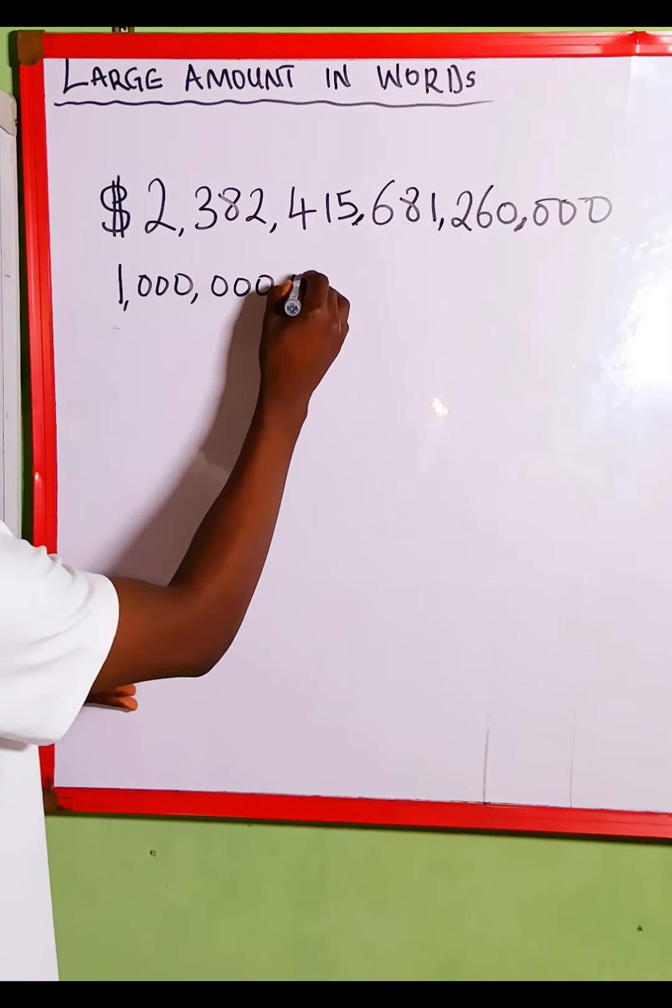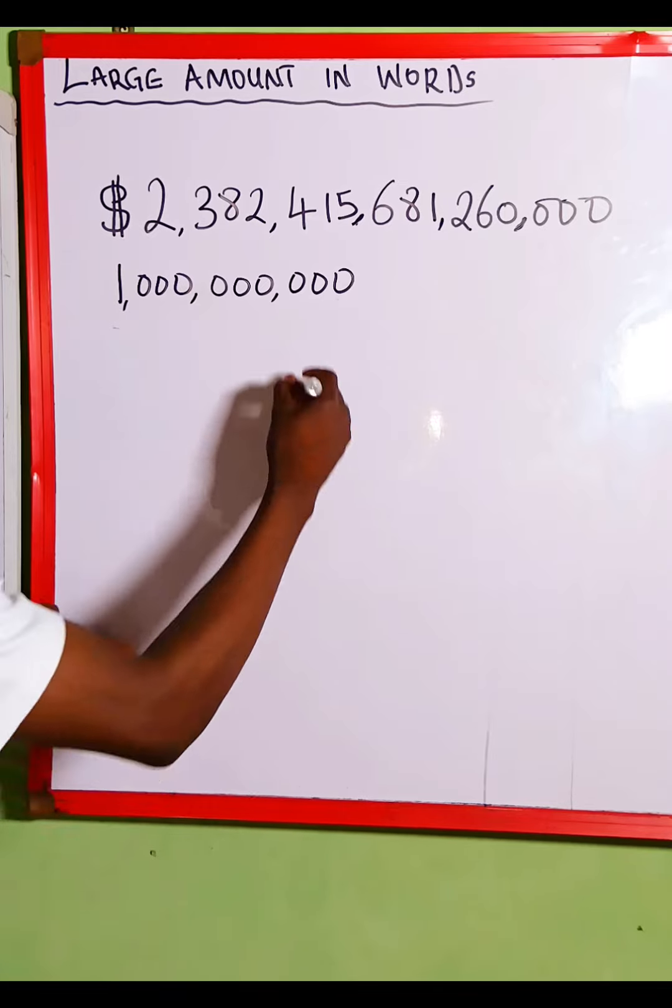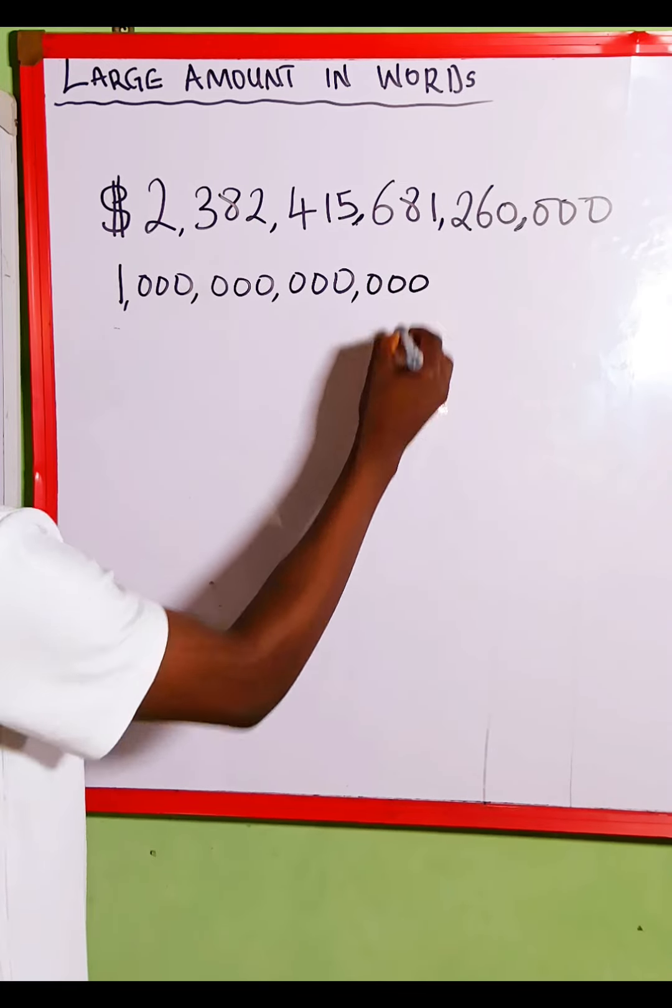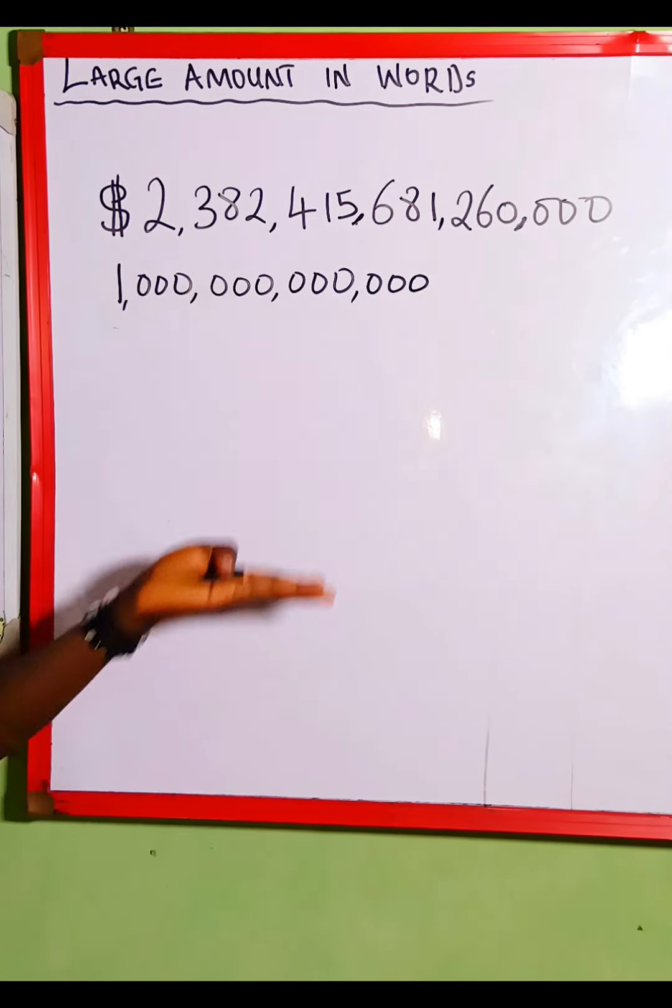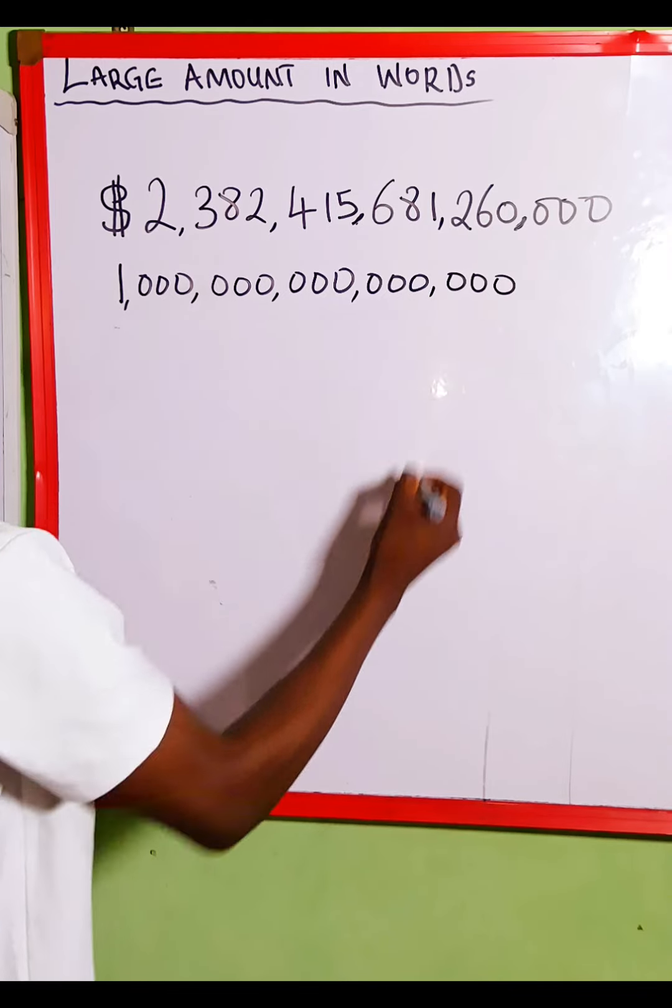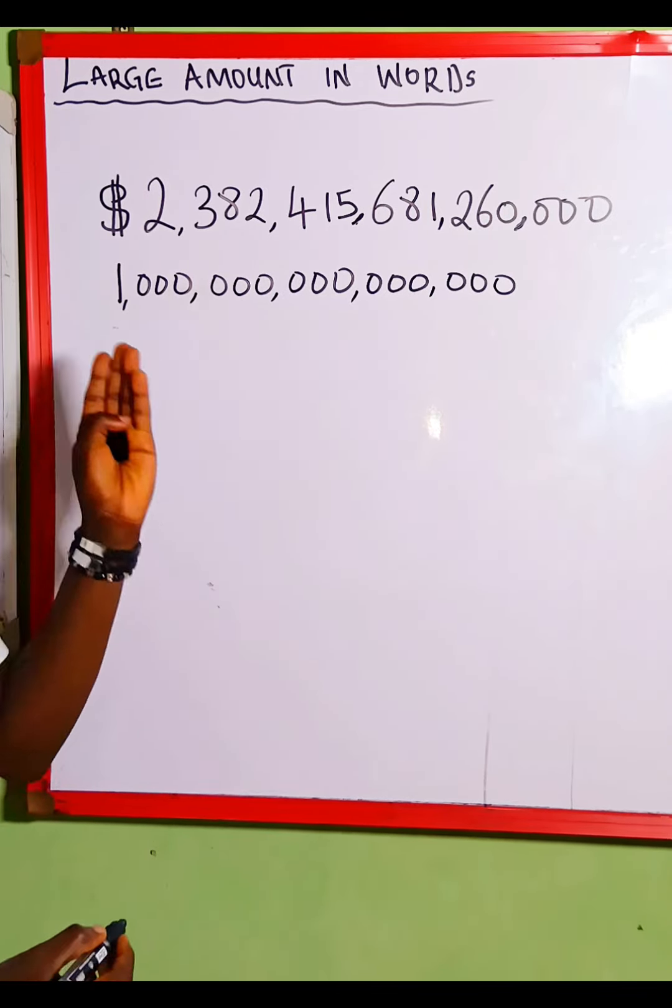So if I add another three zeros, it becomes 1 billion. Then if I add another three zeros, it becomes 1 trillion. Then if I add another three zeros, we pronounce it as 1 quadrillion.